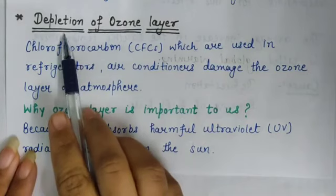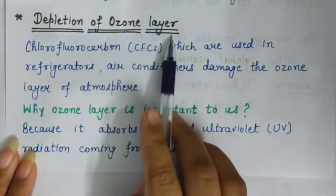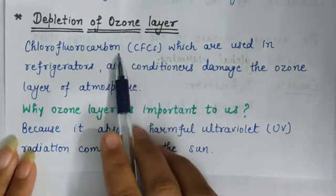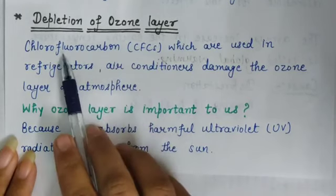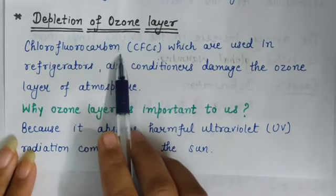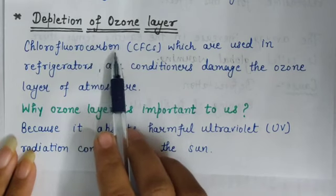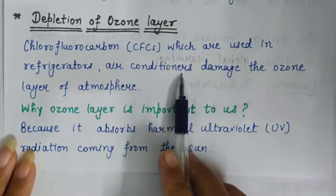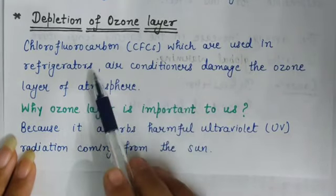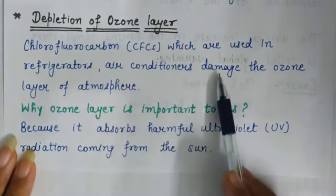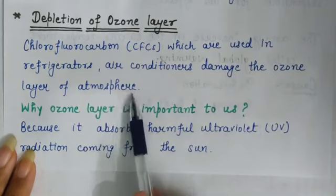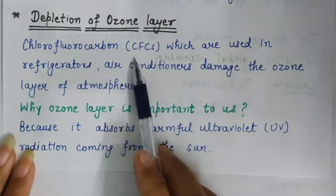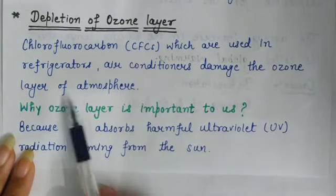The next effect of air pollution is depletion of the ozone layer. We have already learned that chlorofluorocarbon (CFC) is a source of air pollution. Chlorofluorocarbon gas is used in refrigerators and air conditioners, and it damages the ozone layer of the atmosphere.